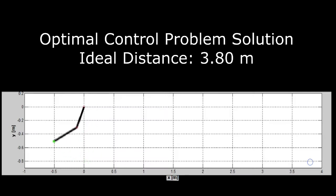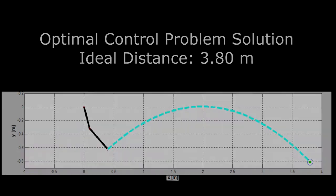In our work, we firstly solve an optimal control problem which creates reference motor trajectories. The simulation shows the motion of the robot when the optimal control problem trajectories are applied to the nominal robot model in an open-loop manner. The ideal distance in this case is 3.80 meters.